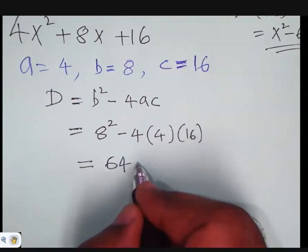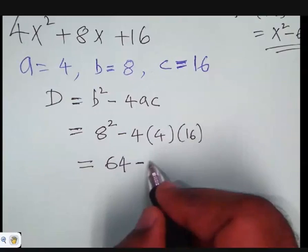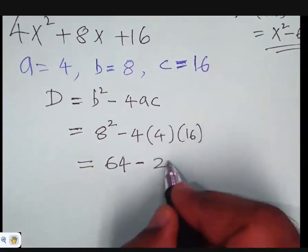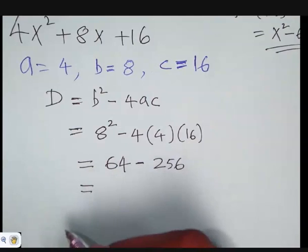...is 64. Minus 4 times 4 is 16, and 16 times 16, you know it is 256. Do you think you are going to get a zero here in this case? I don't think so.